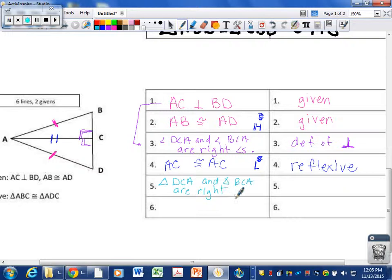Because unless you have a right triangle, you don't have a hypotenuse. We can write this down because of the definition of right triangles. So you know a right triangle if it has a right angle. So up here in step number three we said that both of these triangles have right angles. So now we're saying that they are right triangles.